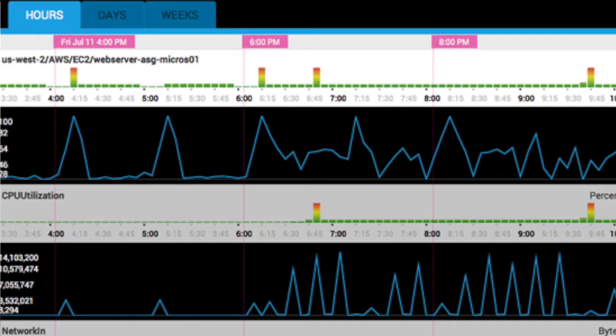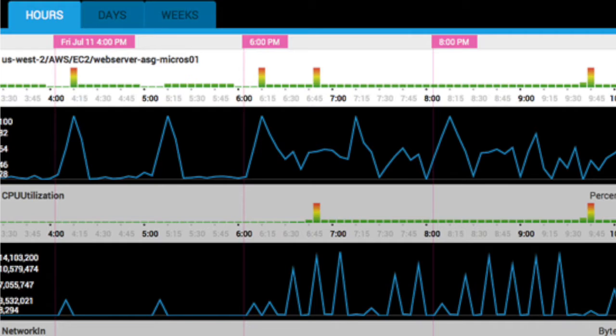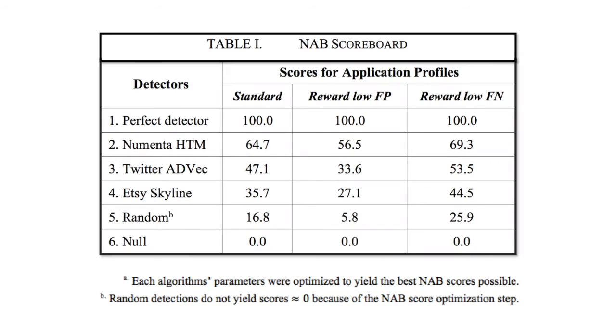The first version of NAB, 1.0, includes 58 data files from a diverse set of sources. And these range from social media, IT infrastructure, machine sensor data. This allows us to test algorithms for real-world applications. The scoring system includes three different application profiles where we weight false positives and false negatives differently because the impact of false positives versus false negatives may vary based on your application.